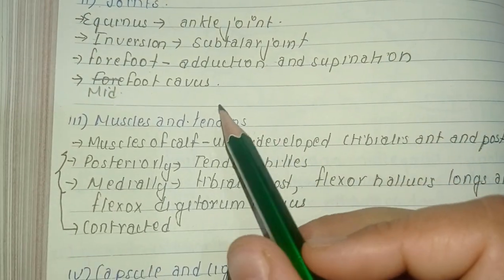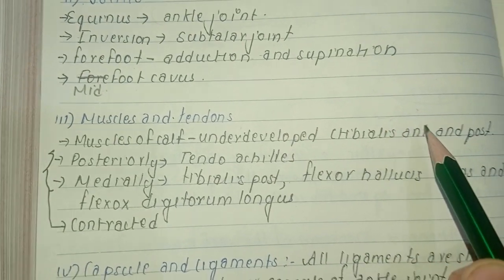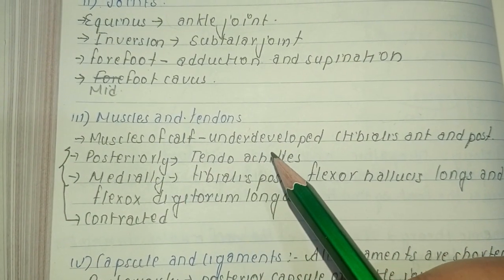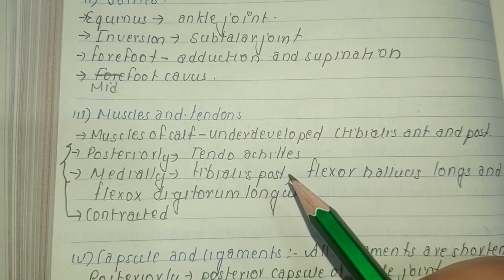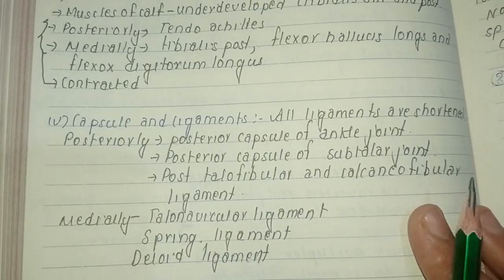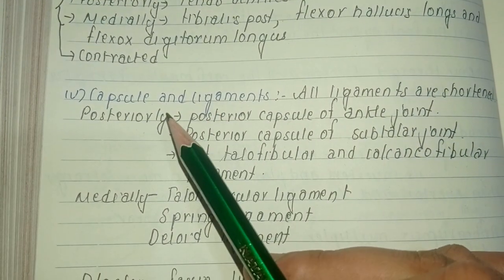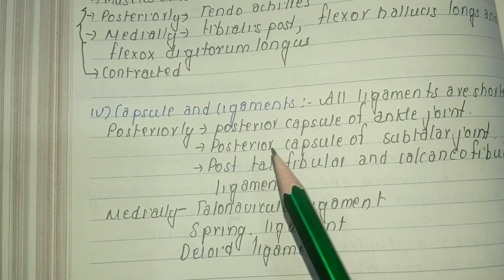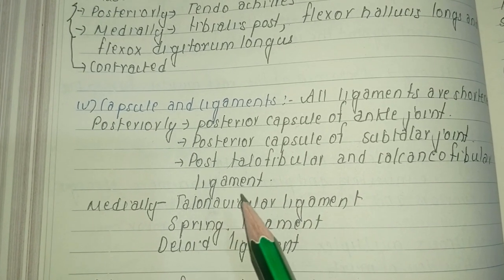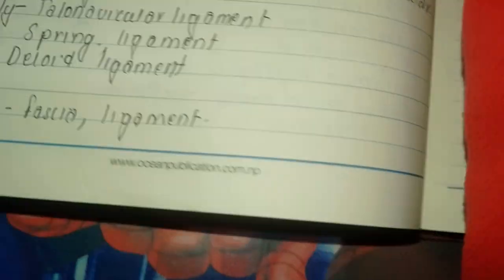Regarding muscles and tendons: the calf muscles are underdeveloped, specifically tibialis anterior and posterior, and the tendo achilles is contracted. Medially, the tibialis posterior, flexor hallucis longus, and flexor digitorum longus are contracted. Regarding capsule and ligaments: posteriorly, the posterior capsule of the ankle and subtalar joint, posterior talofibular, and calcaneofibular ligaments are contracted. Medially, the talonavicular ligament, spring ligament, and deltoid ligament are all contracted.